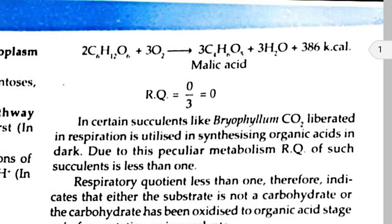The formula for succulents: two moles of glucose plus 3 O₂, upon oxidation, produces three moles of malic acid (C₄H₆O₅) plus three moles of H₂O, and 386 kilocalories of energy is liberated. RQ equals moles of CO₂ divided by moles of O₂ equals zero CO₂ divided by 3 moles of oxygen, so RQ equals zero for succulent plants.